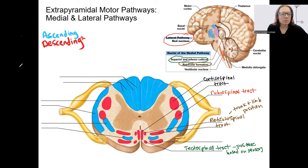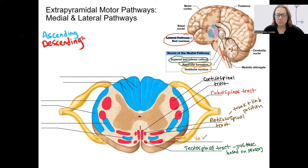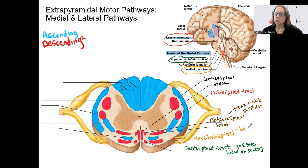The last pathway is the vestibulospinal, from the vestibular nucleus, which receives information from the vestibular apparatus of the ear — really important for balance and equilibrium. This pathway is also important for adjusting posture and movement, with balance as its key function based on that vestibular input.